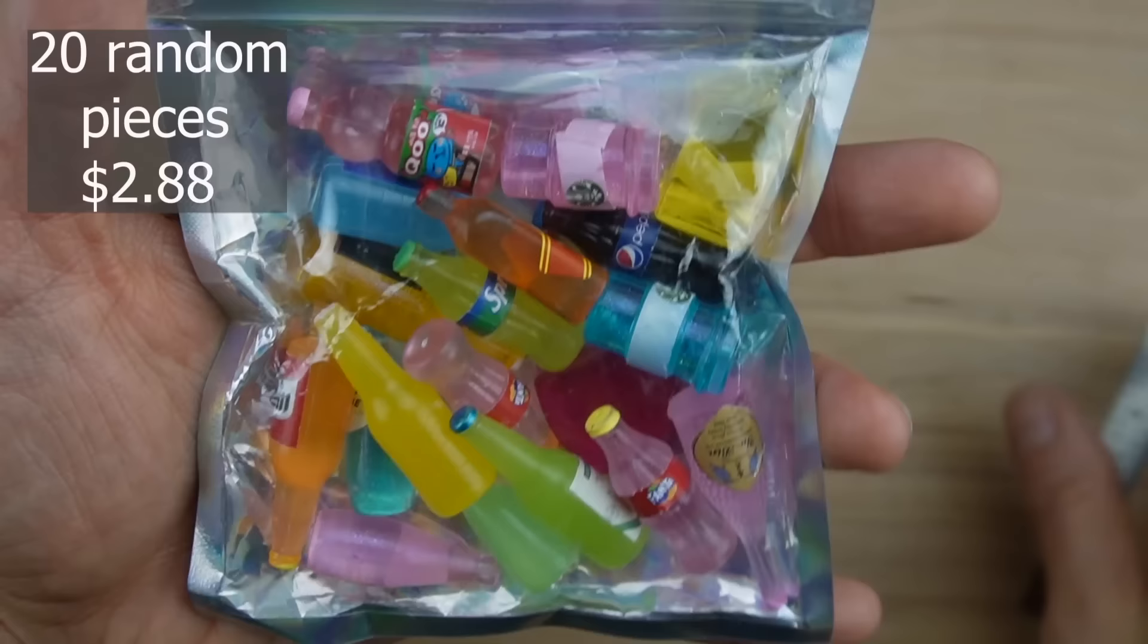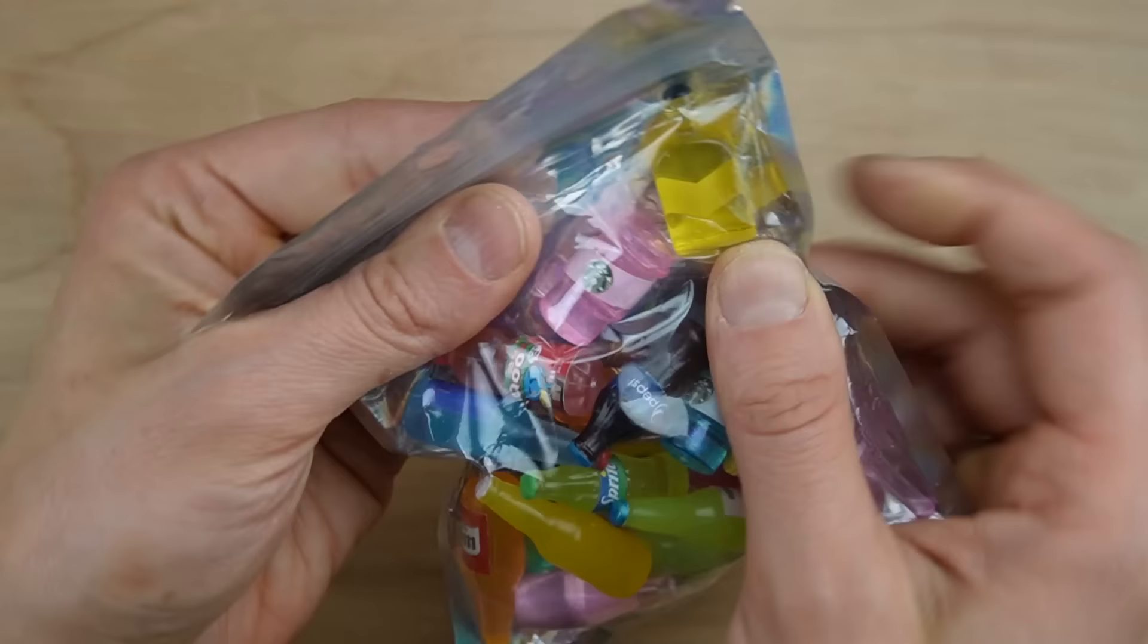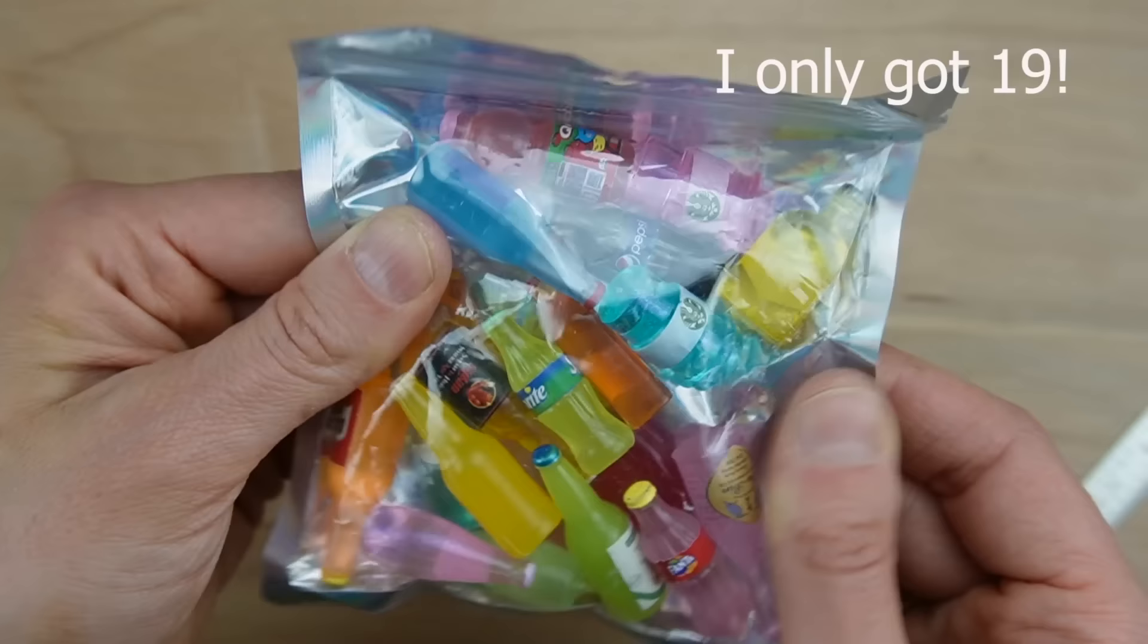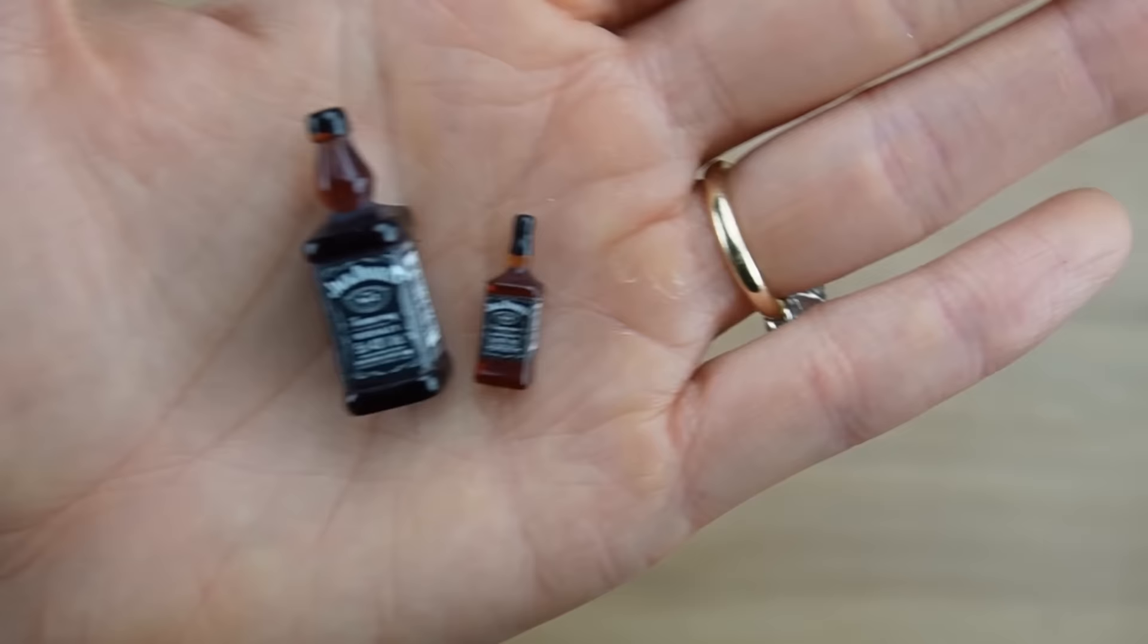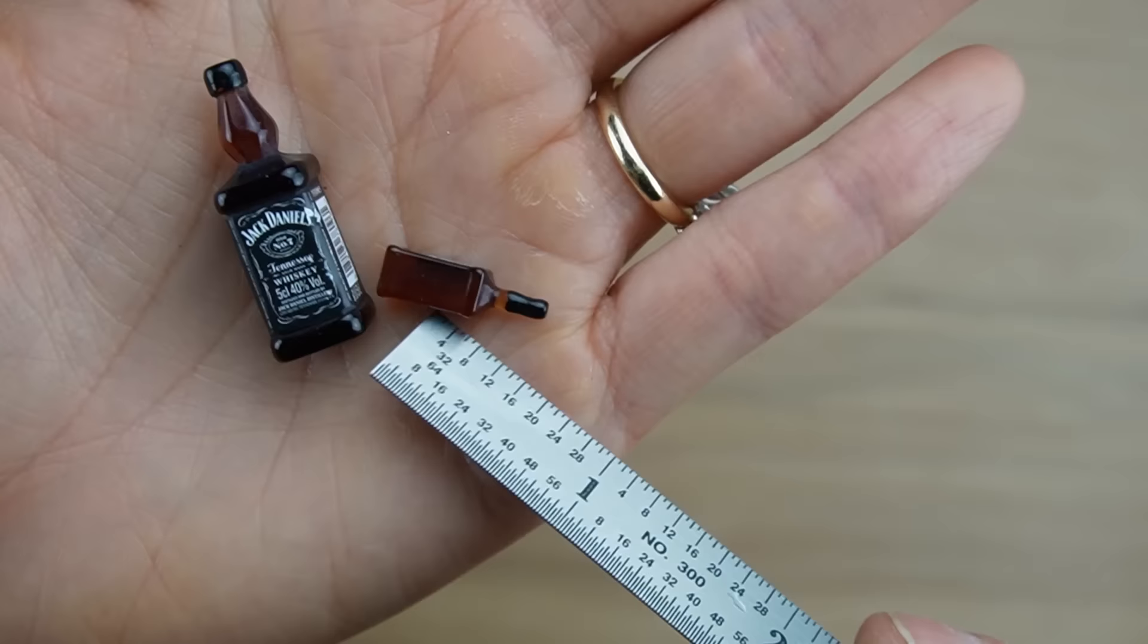This is a fun mystery grab bag style thing where they include 20 random pieces from a photo. Some of them have a little bit of a shoddy label application, but others are quite cute. Some of these look like they're 1-12 scale and others are Barbie scale. I like the size of the small Jack Daniels bottle. Actually, I like both of them. I think these will look good in my little pub.